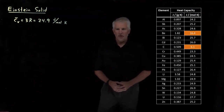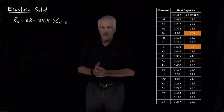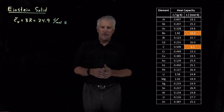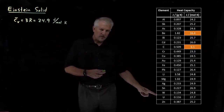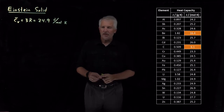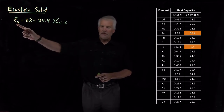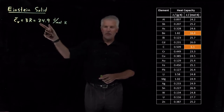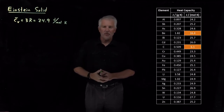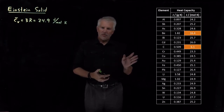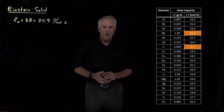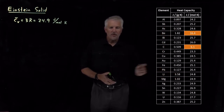We've seen that the law of Dulong and Petit, which is the same thing as the predictions made by the Equipartition Theorem, tells us that for monatomic solids, the constant volume heat capacity should be 3R — that's 24.9 joules per mole Kelvin. That works pretty well for a lot of solids. Many of these numbers are pretty close to 24.9, some very close.